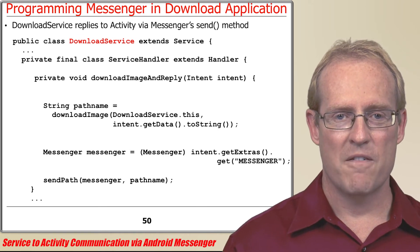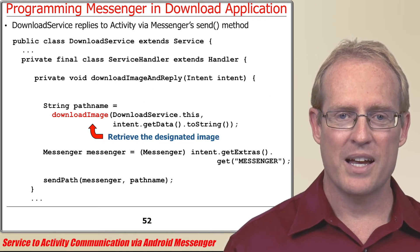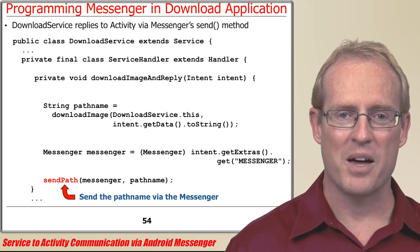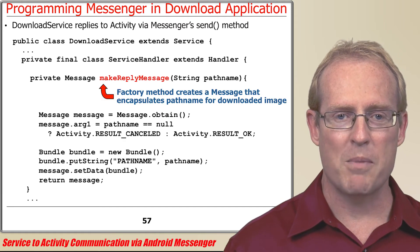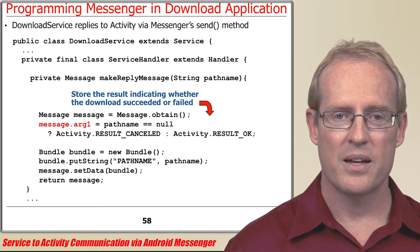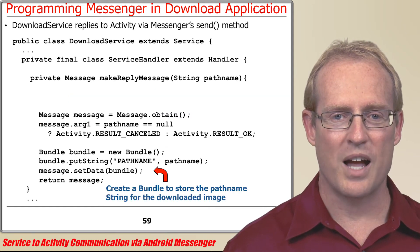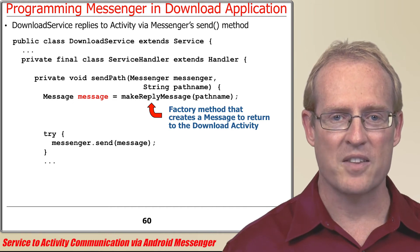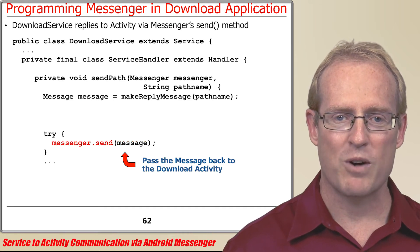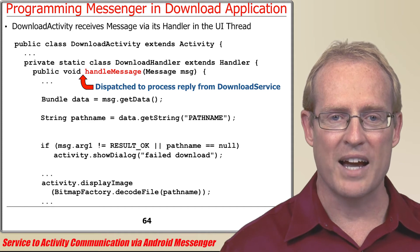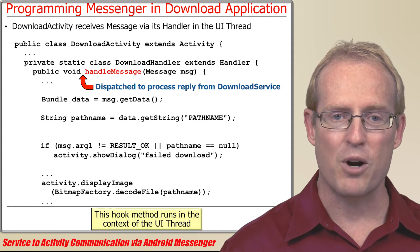This analysis of download service focuses on its downloadImageAndReply method, which retrieves a designated image, copies it into a local file, extracts the Messenger stored as an extra in the intent, and passes the Messenger and path name to the sendPathHelper method. This method calls the makeReplyMessageFactory method to create a message that encapsulates the path name for the downloaded image file. In addition to storing whether the download succeeded or failed, makeReplyMessage also stores the path name in a bundle, which is an object that maps string values to parcelable types and can be used to pass data across processes. The message returned from makeReplyMessageFactory is then passed back to the download activity as a parameter to the send method provided by the Messenger's reference. The Android Binder framework collaborates with the Hammer concurrency framework to dispatch this reply message as a parameter to the downloadHandler's handleMessageHook method in the user interface thread of the process where the download activity resides.